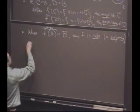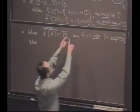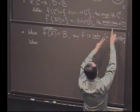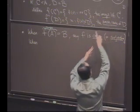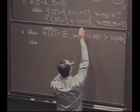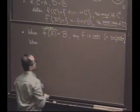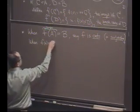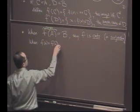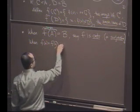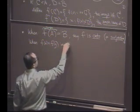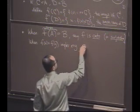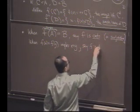What else? Well, that's when you hit everything, and now if it never has multiple points getting sent to one point, we'll say it's one to one. And there's another way to say that: if the image of two points being equal implies that X and Y are, in fact, equal, we'll say F is one to one.